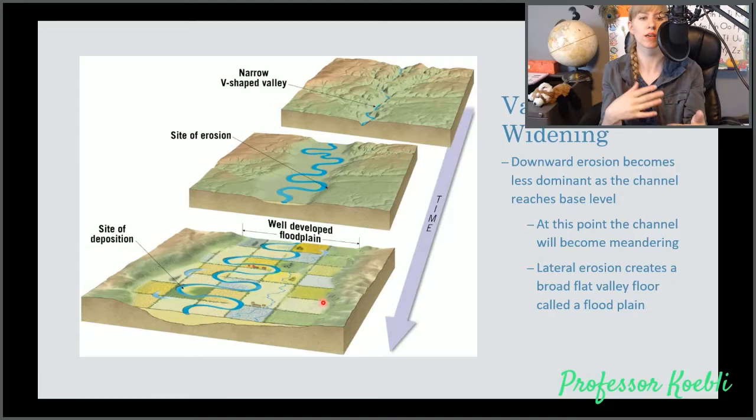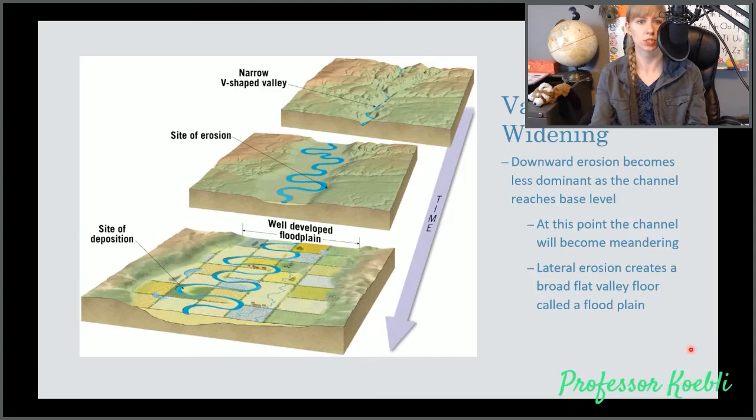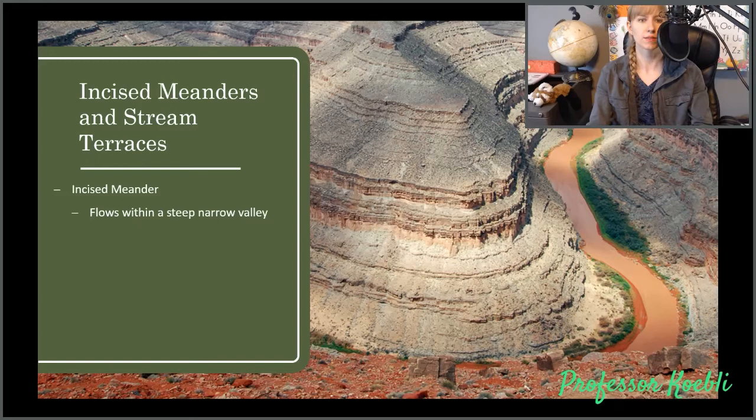These streams are constantly changing in width and narrowness and how far apart the bends are. They also periodically flood, which is why you get a floodplain. It's a pretty neat concept.